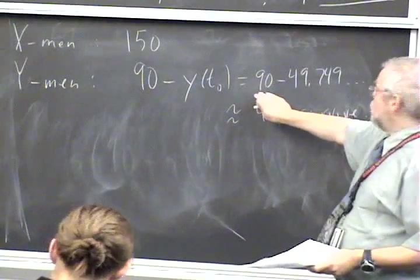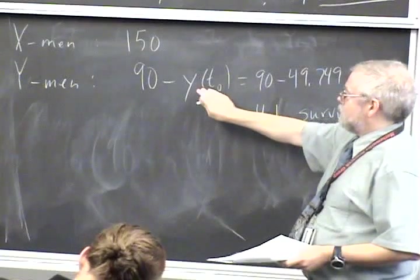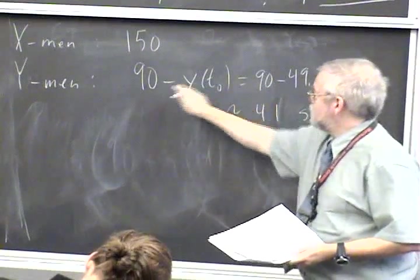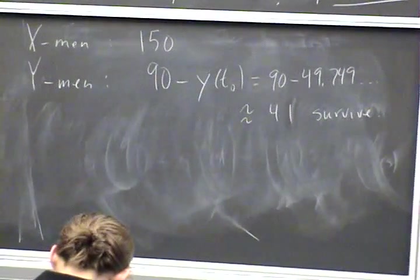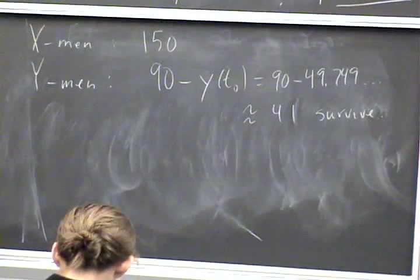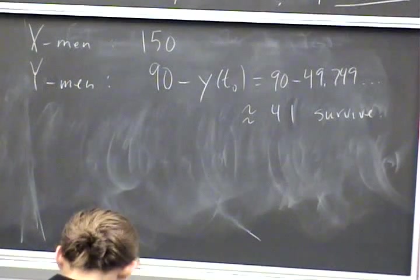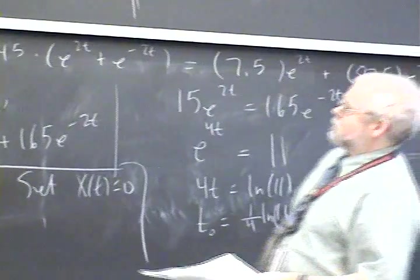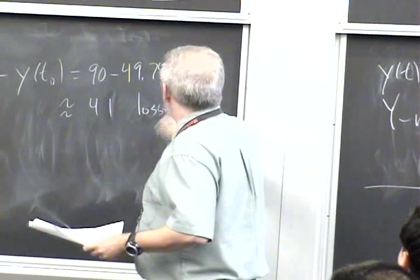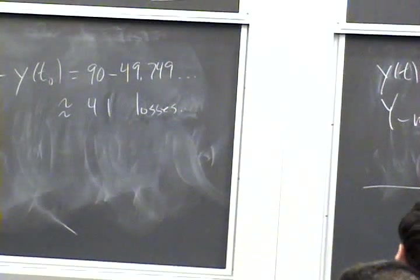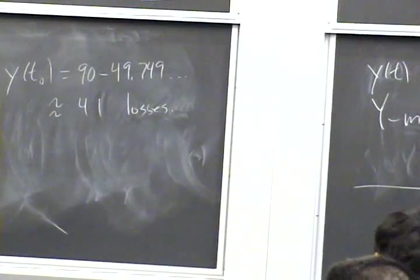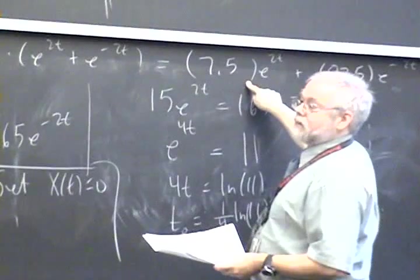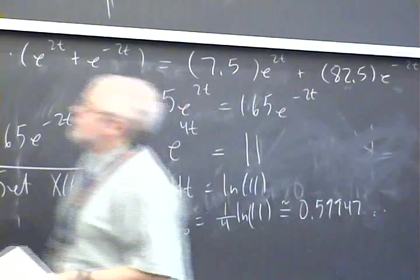That's the initial number. So Y(t) represents the number of fighters at time t, right? So when you take the difference, that's the number of losses. And that's what we're looking at - the number of losses.